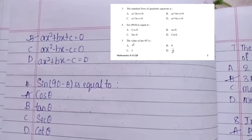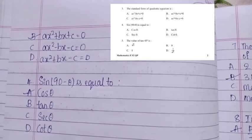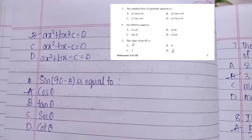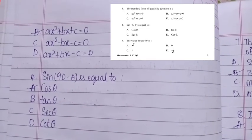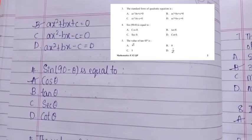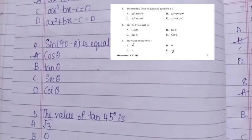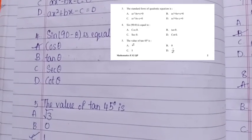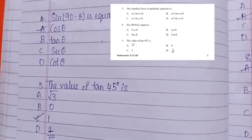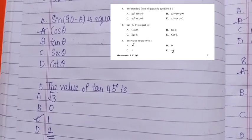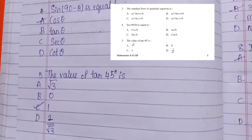Fourth question: sin(90° − θ) is equal to cos θ. The value of tan 45° is 1.